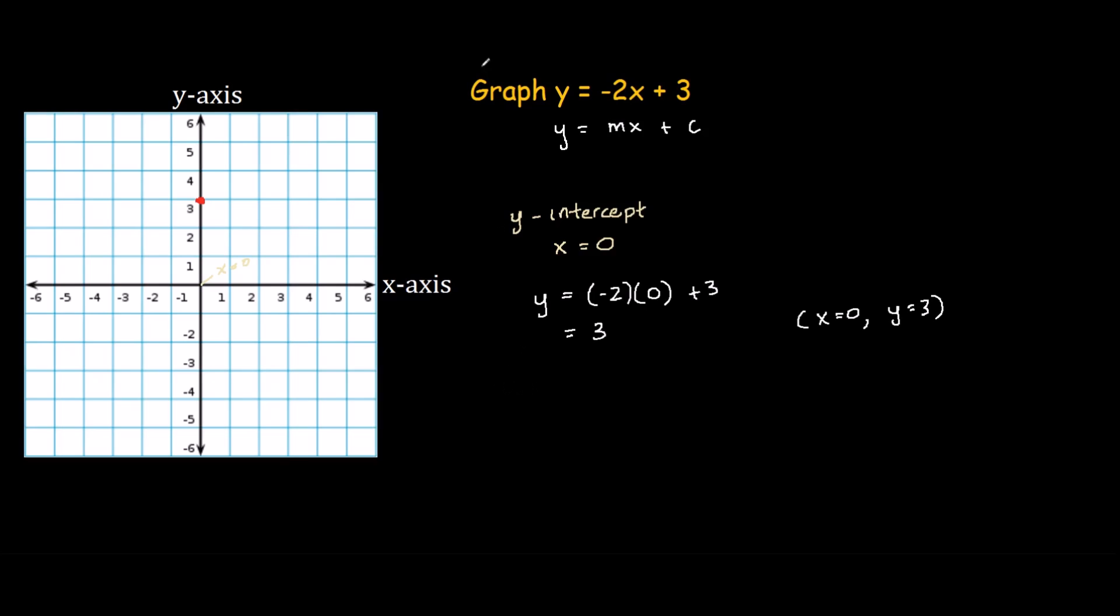Here we will be finding the slope of the line. To use the equation to find the slope, we take the coefficient in front of x. The coefficient means the number in front of x. In this case, it's -2.